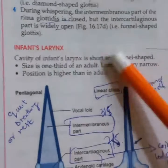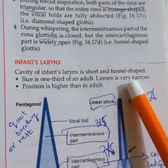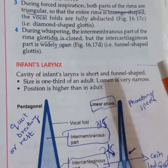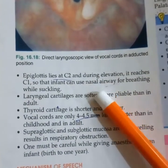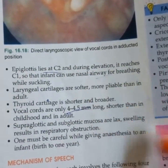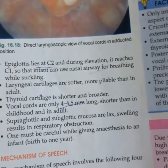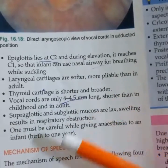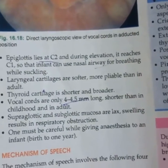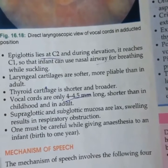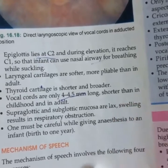In the infant larynx compared to the adult, it is shorter and funnel-shaped, located at C1-C2. The infant can use the suckling airway. In adults, the epiglottis cartilage is softer, the thyroid cartilage is shorter and broader, and the vocal cord is 4 to 4.5 mm long. The supraglottic and subglottic mucosa in infants is lax, making them prone to swelling and respiratory obstruction.